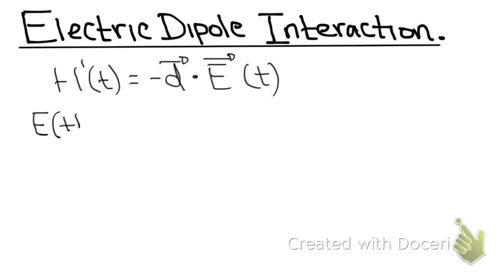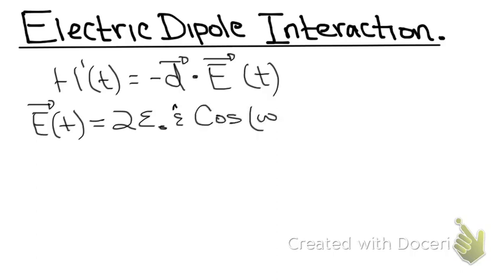Let's define the electric field as E(t) = 2ε₀ε̂·cos(ωt), where ε̂ is the unit vector giving the polarization direction and ε₀ is the field amplitude. The factor of 2 is introduced so that when we rewrite cosine in exponential form, the 2 cancels out and we are left with a cleaner expression.